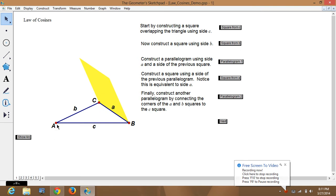So, you start with this triangle ABC, and opposite A is little a, opposite angle C is side little c, and opposite angle B is side little b.